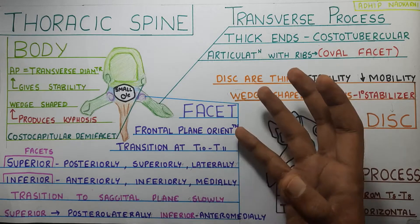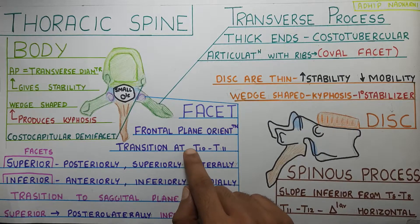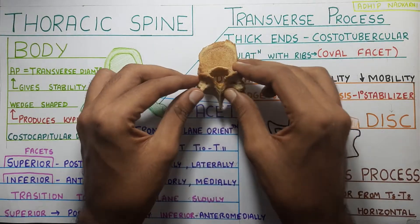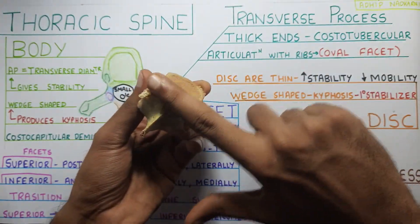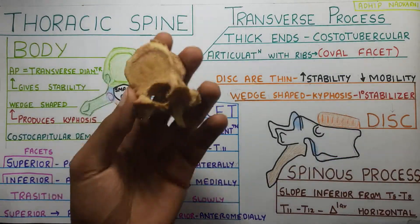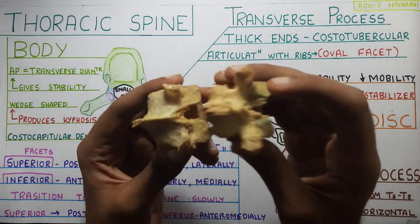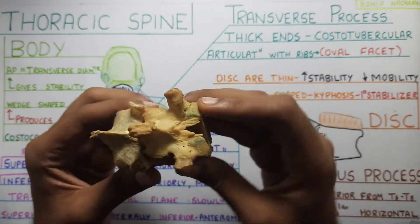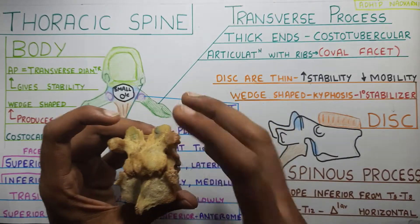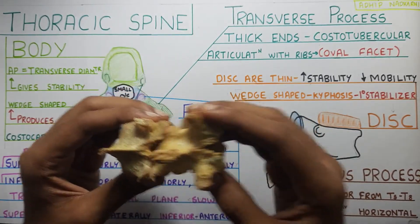Now there are the other normal facets seen in all vertebrae. These facets are oriented in the frontal plane, and they start slowly transitioning at around T10 to T11 toward the sagittal plane. If you look at the normal thoracic vertebra, the facets are oriented in the frontal plane — this is the anterior side, posterior side, and the facets are in the frontal plane. Because of this frontal plane orientation, the lateral flexion movement will be the most significant movement seen in the thoracic region.